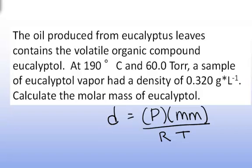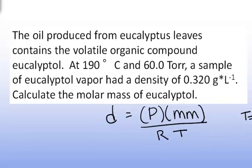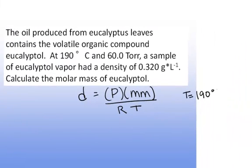We're given the temperature, which equals 190 degrees Celsius. The pressure equals 60 torr, and the density equals 0.320 grams per liter.